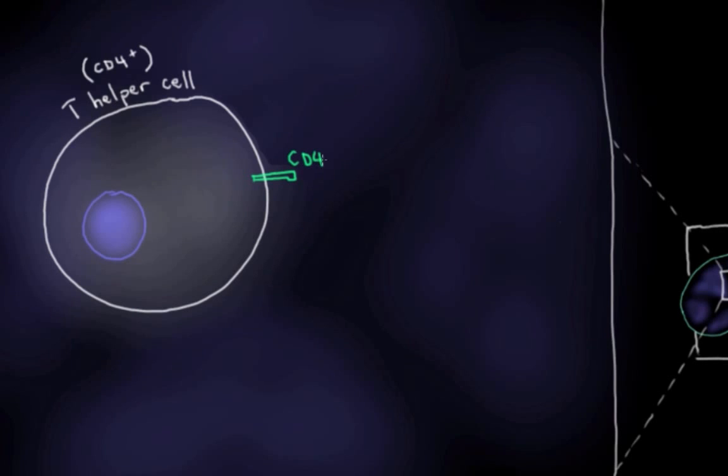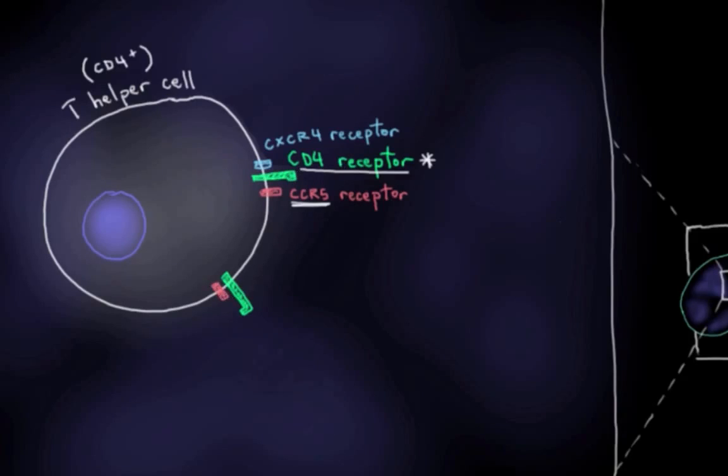We have the CD4 receptor, which is the primary receptor that HIV needs, and we have either one or both of CCR5 and CXCR4, CXCR4 being much less prevalent. CCR5 is really the preferred coreceptor that most strains of HIV need to bind. But these are both called coreceptors in this context here.